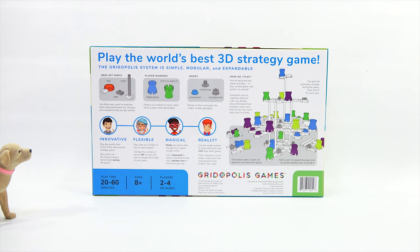You'll pick it up in no time. No throwing the pieces. The grid set physically changes during the game. How much? It is up to you. Each player gets ten grid set pieces to use during the game. Add a pad to expand the play zone, or use the blocker box to shrink it. Ooh, so it's like a building set and a game all in one. Looks crazy. Innovative, flexible, magical. Really? Really? I'll let everybody read those, but I think it's time for us to get this out of the box. So when we come back, it is time to check out Gridopolis.